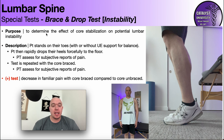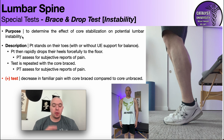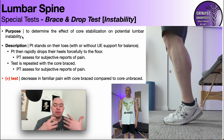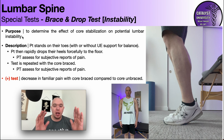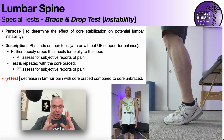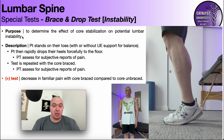This is a test used to determine the effect of core stabilization on potential lumbar instability. The test is centered around the idea that if the lumbar spine is unstable and you give it a shock — a physical shock — kind of jolt it or jostle it a little bit, it would reproduce the patient's pain. And so that's what we're going to do: we're gonna give it a jostle.